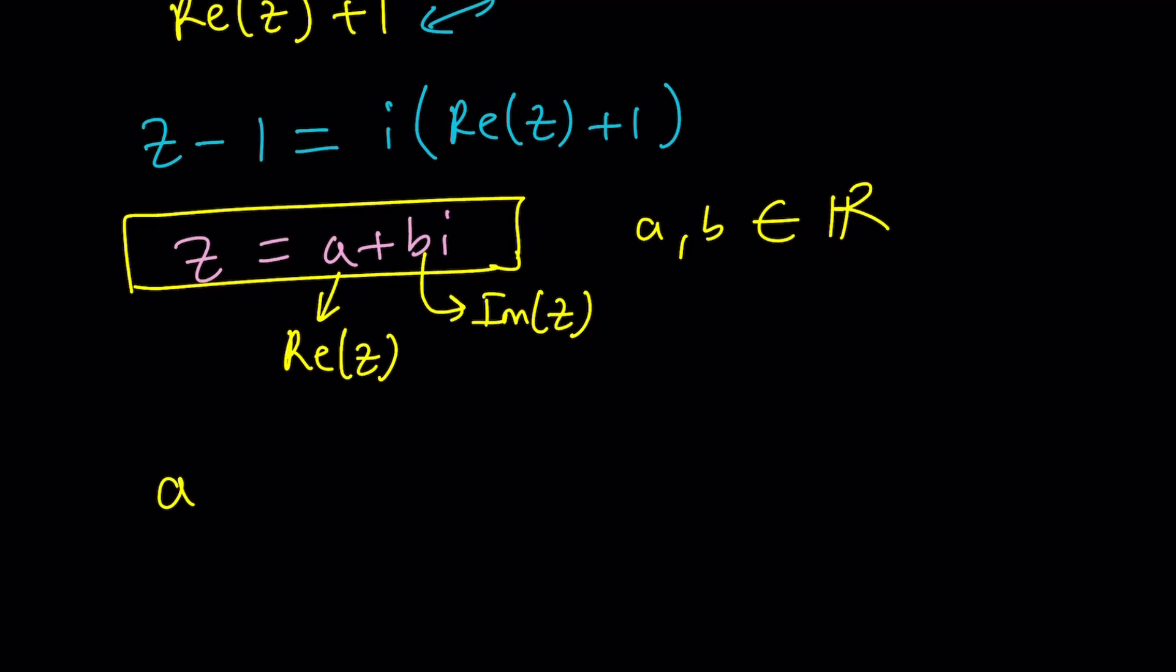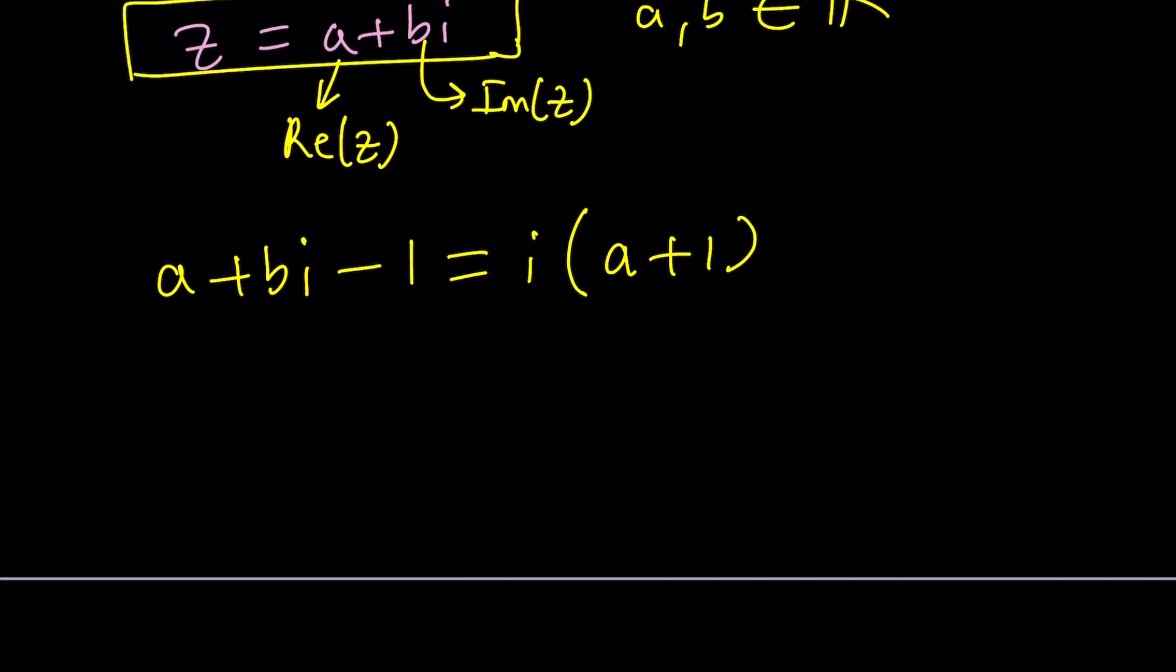Replace Z with A plus B I, subtract one from it, and then replace real part of Z with A and just add one to it. Notice that we have an imaginary number on the right and a complex number on the left. So let's write it like this: A minus 1 plus B I equals A plus 1 times I. Here, I don't need to distribute because the imaginary part is clear. It's clearly A plus 1. You don't need to distribute it.